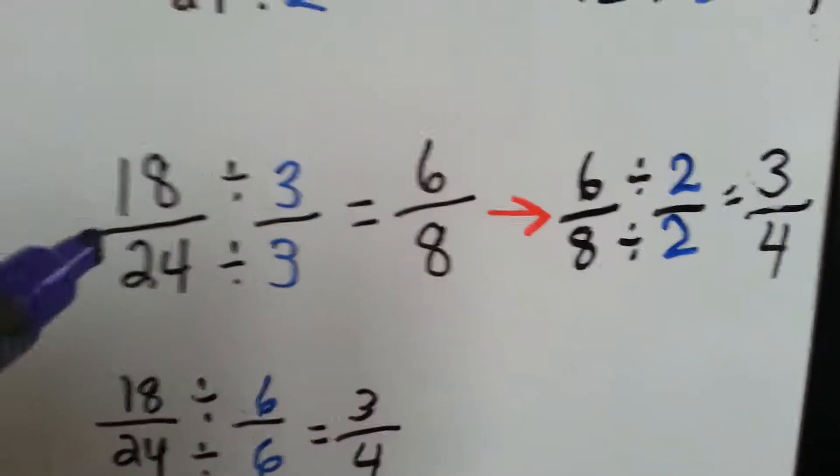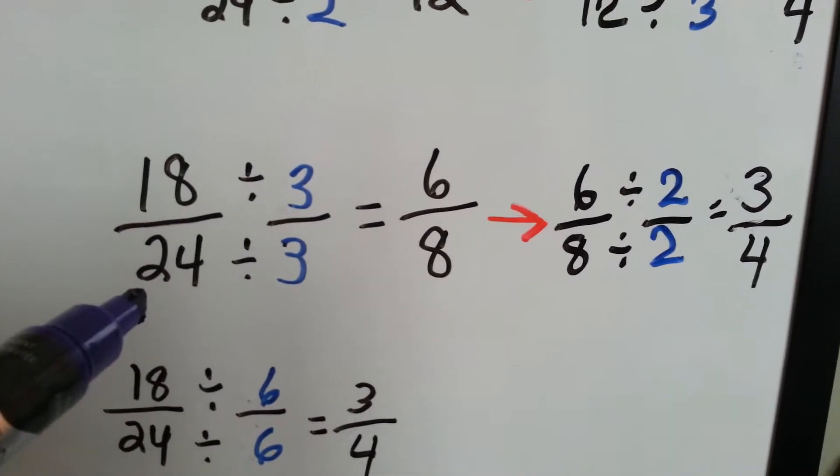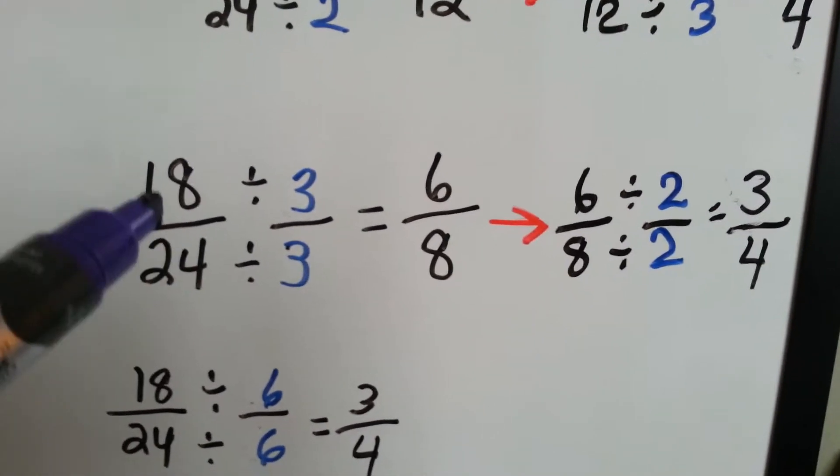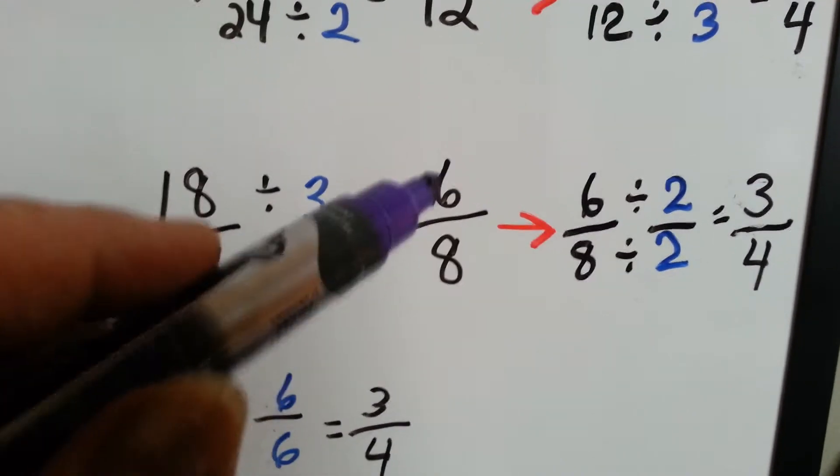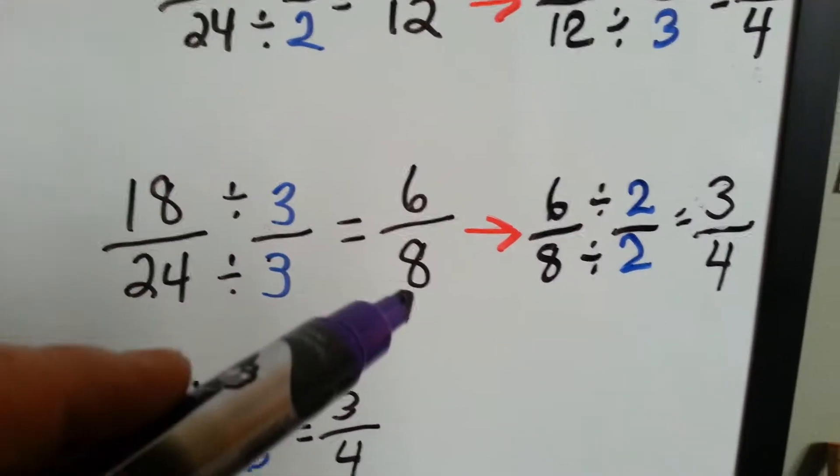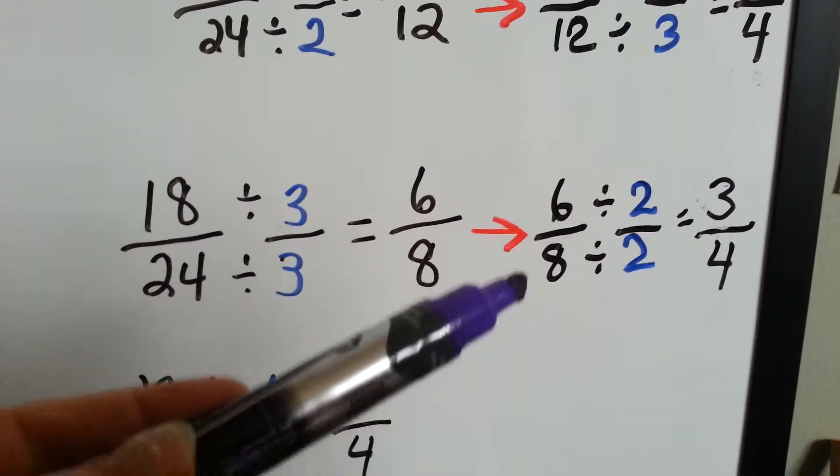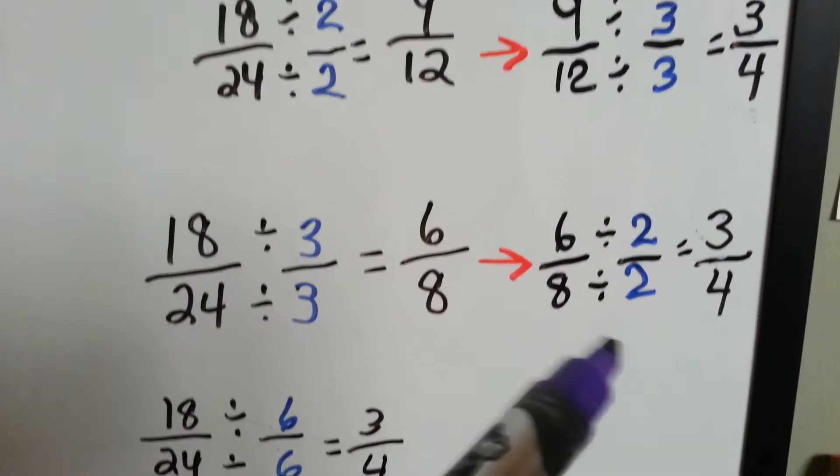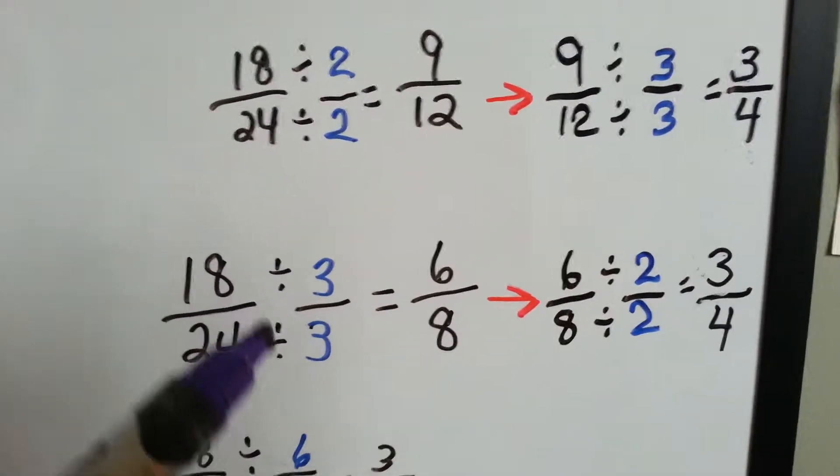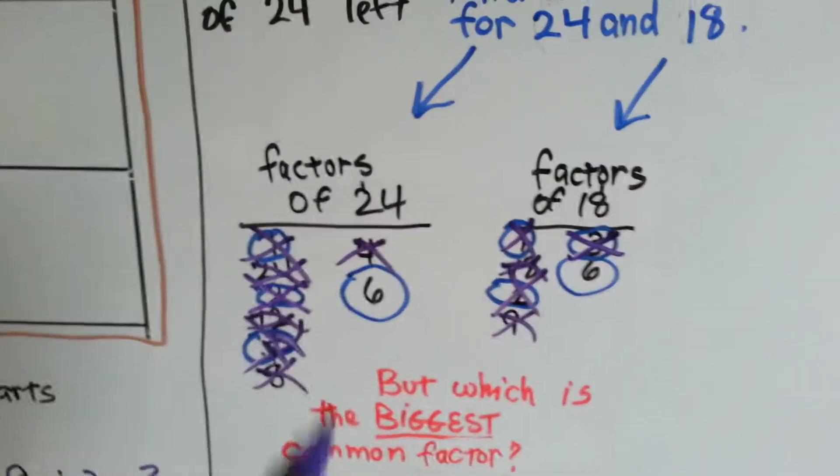So now we're here. We're going to divide the eighteen twenty-fourths by three to try to simplify or reduce it. Eighteen divided by three is six. Twenty-four divided by three is eight. We get six-eighths. It can still be made smaller. Two can go into both of these. So six divided by two is three. Eight divided by two is four. And we end up with our three-fourths, but we had the double work again. Why? Because three wasn't big enough. You terrible three made us work twice?